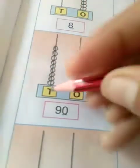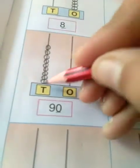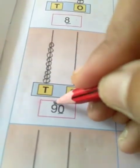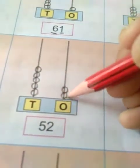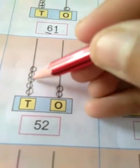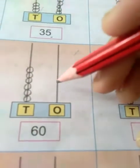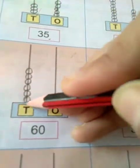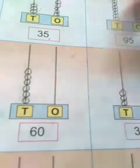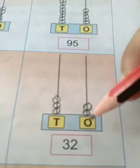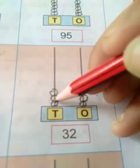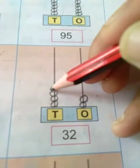For 90, zero is there so no bead is drawn in the 1's place — we leave the 1's place empty. Nine is in the 10's place, so we draw 9 beads there. For 52: 2 beads in the 1's place and 5 beads in the 10's place. For 60: nothing in the 1's place, and 6 beads on the 10's place. For 32: 2 beads in the 1's place and 3 beads in the 10's place.